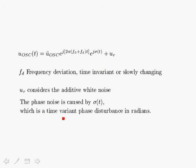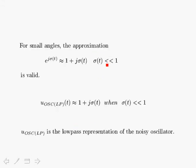The phase noise itself is time variant and is expressed in radians. Usually the phase noise is much less than one, so it is small, and we can approximate the exponential as follows: e to the j-sigma of T is approximately equal to one plus j-sigma of T. This comes about because the cosine of a very small angle is one and the sine of a very small angle is the angle itself.